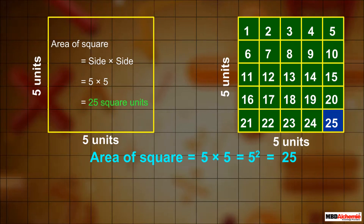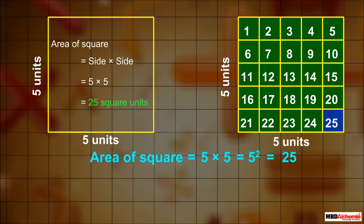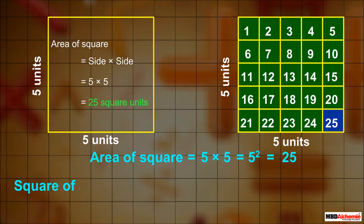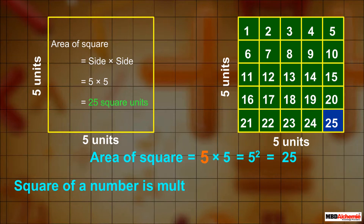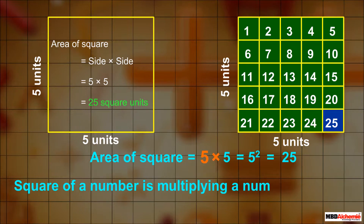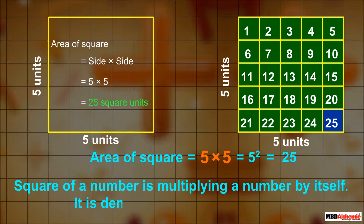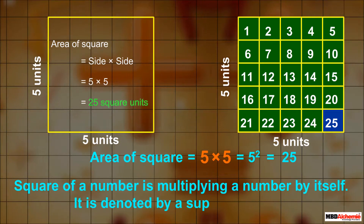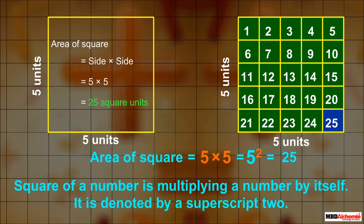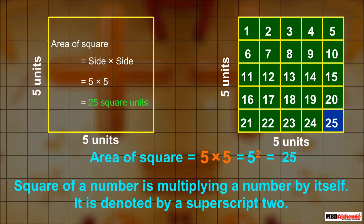Which is equal to 25. The square of a number is multiplying a number by itself. It is denoted by a superscript 2.